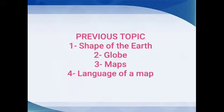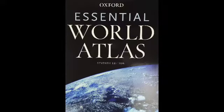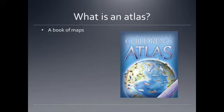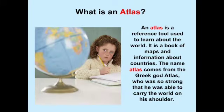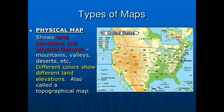Today's topic is Atlas. We have learned about Atlas — what is an Atlas? A simple definition: a book of maps is called an Atlas. It contains a large variety of maps such as a physical map.